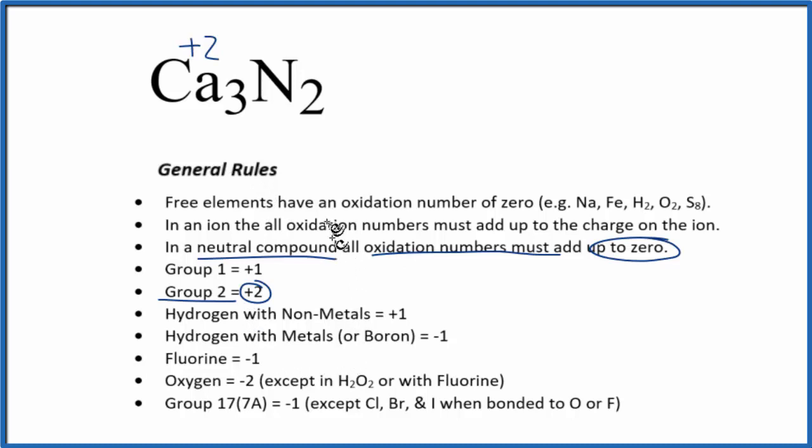Nitrogen we don't see on our list, so think of it this way. Everything's got to add up to zero. 3 times +2, that's +6. So we'll need a -6 on this side here. So what can we multiply by? 2 times something that'll give us -6. 2 times -3 gives us -6. So the oxidation state on each nitrogen is going to be -3.